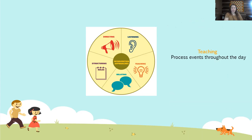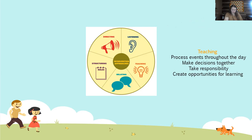The next one is teaching. Process events throughout the day, make decisions together, have the child take responsibility, and create opportunities for learning. This helps children internalize new coping strategies and behaviors. We use this approach to guide a child into making better choices and more appropriate behaviors. For example, after a situation, a teaching approach could be: 'Last time you were angry, you hit the wall. Instead, why don't you hit a pillow the next time you're feeling that way?' This shows it's still okay to be angry and express that feeling, but you're making the behavior safe.